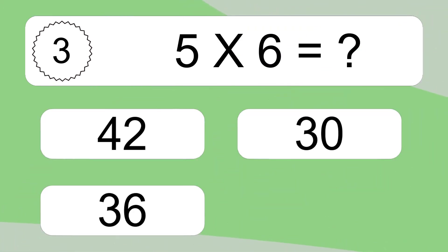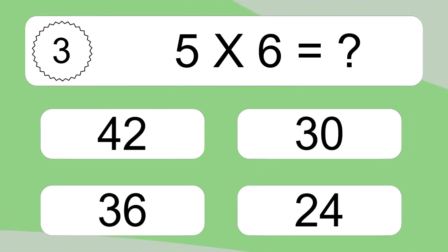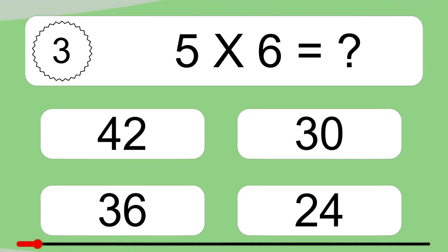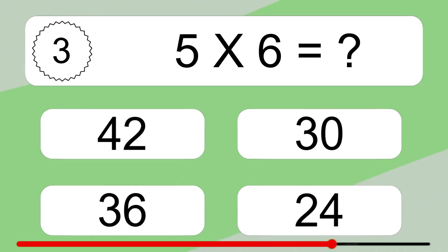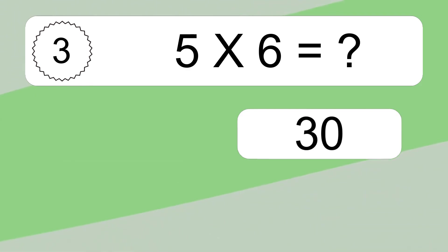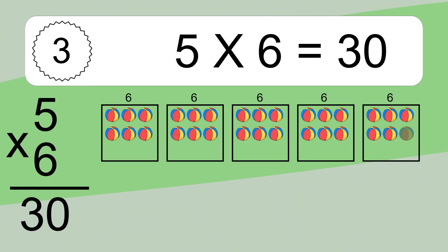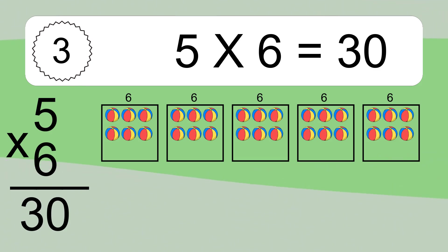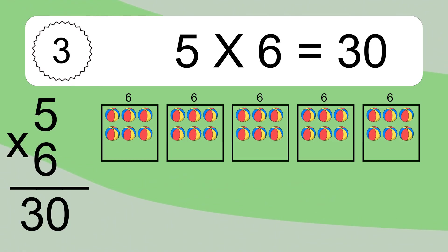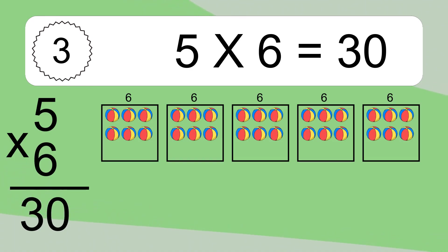Five times six equals what? Five times six equals thirty. We have five boxes, and each box has six colorful balls inside. If you count all the balls in all the boxes together, you will have five times six balls. This equals thirty balls.